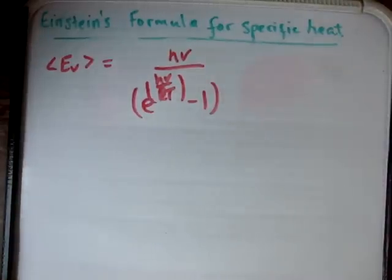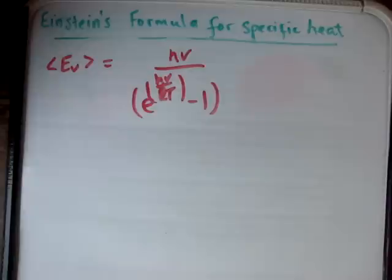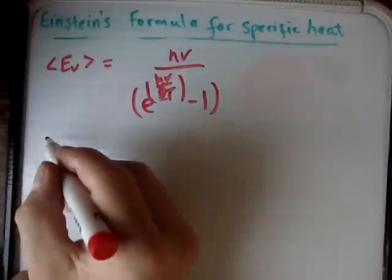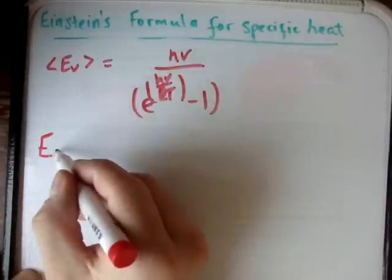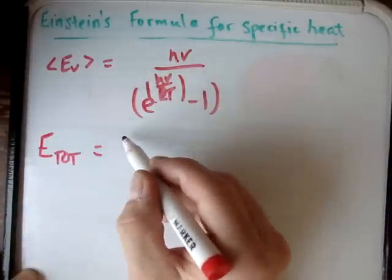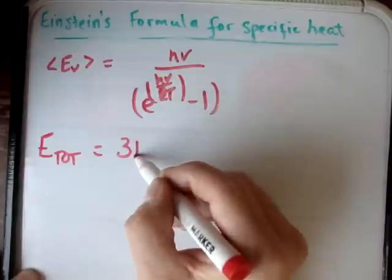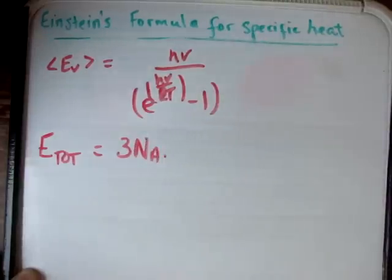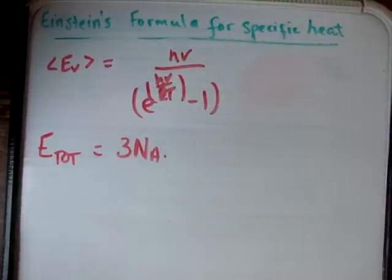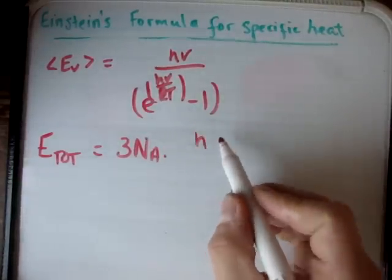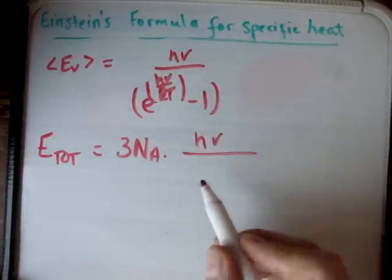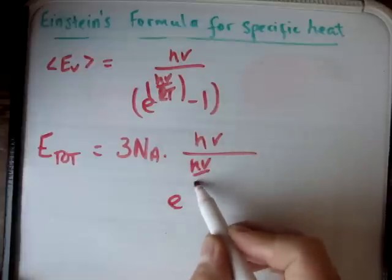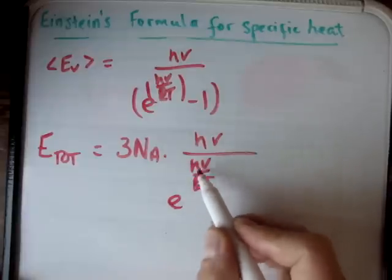Einstein said we have 3 times Avogadro's number of linear harmonic oscillators. So the total energy in the system is equal to the number of harmonic oscillators, 3N_A, times the average energy of each one of these harmonic oscillators given by Planck's formula.